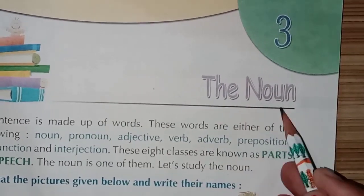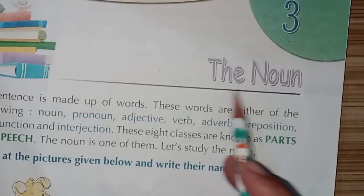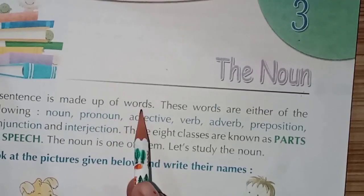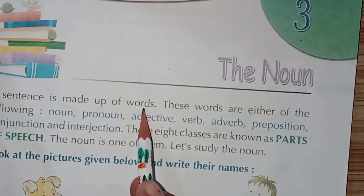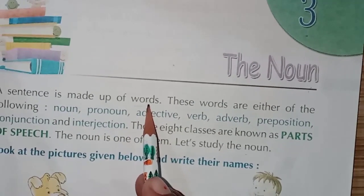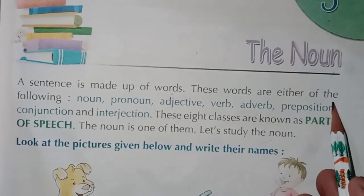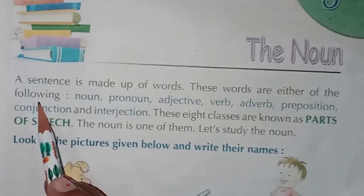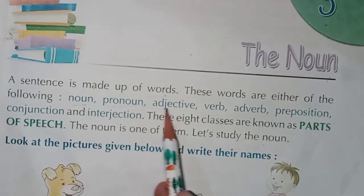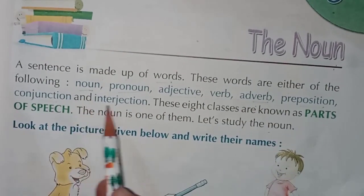Our chapter is the noun — it is our third chapter. Let's start. What is noun? A sentence is made up of words. Sentence kya hota hai? Group of words. Clear? These words are either of the following — a sentence can have noun, pronoun, adjective, verb, adverb, preposition, conjunction and interjection.